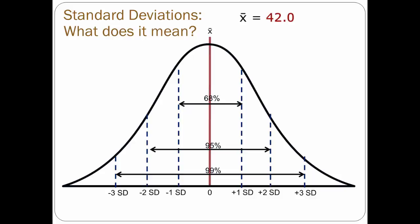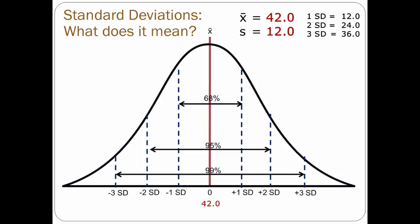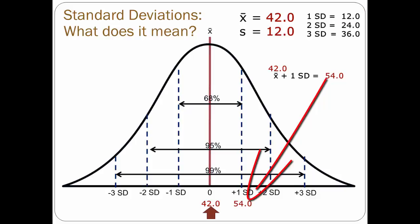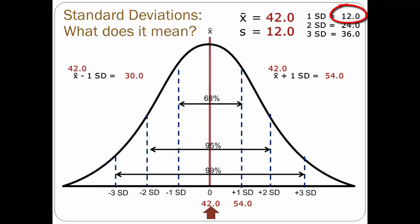Let's see how this works. Assume a mean of 42 and a standard deviation of 12. One standard deviation is 12, two standard deviations is 24, and three standard deviations is 36. The mean of 42 plus 12 is 54, plotted at one standard deviation above the mean. And 42 minus 12 is 30, plotted at one standard deviation below the mean. Assuming the scores are normally distributed, 68% of the scores are between 30 and 54, or plus or minus one standard deviation of the mean.